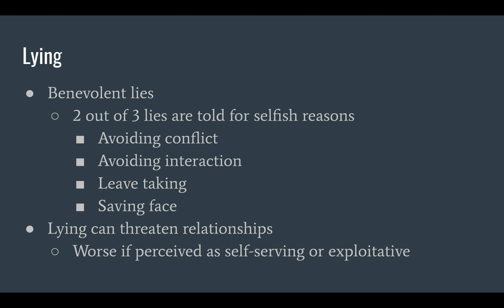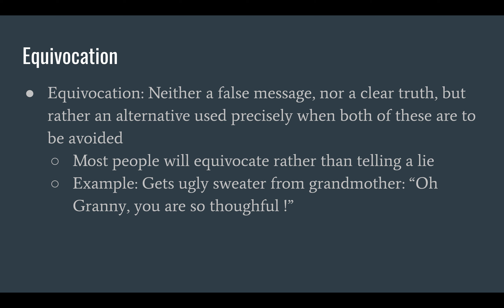Lying can threaten a relationship, and it's worse if your lie is seen as self-serving or exploitative. Similar to lying but slightly different is equivocation — neither a false message nor a clear truth, but rather an alternative used precisely when both of those are to be avoided. Most people would rather equivocate than tell a lie. For example, you get an ugly sweater from your grandmother and she asks, do you like it? And you say, oh granny, you're so thoughtful. That's an equivocation — you're not lying, but you're not telling the truth either.